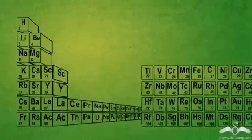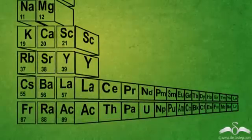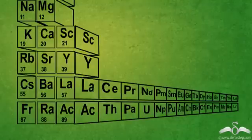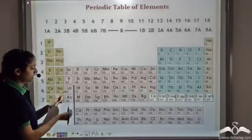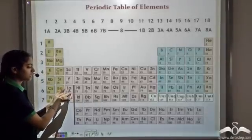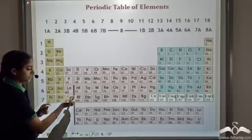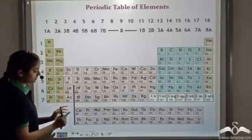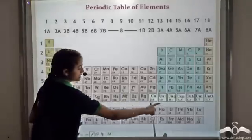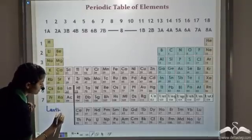If we look at the periodic table and move half the part away, we see that a series of elements lies behind La (lanthanum) and another series lies behind Ac (actinium). La has atomic number 57 and the element after it, Hf, has atomic number 72. So the elements in between — atomic numbers 58 to 71 — which lie behind lanthanum are called the lanthanide series.